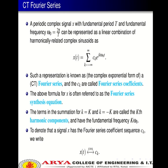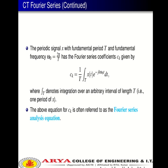The above formula for X(t) is often referred to as the Fourier series synthesis equation. The terms in the summation for k = K and k = −K are called the kth harmonic components and have fundamental frequency kω₀. To denote that signal X has Fourier coefficient sequence Cₖ, we write X(t) →(CTFS) Cₖ.